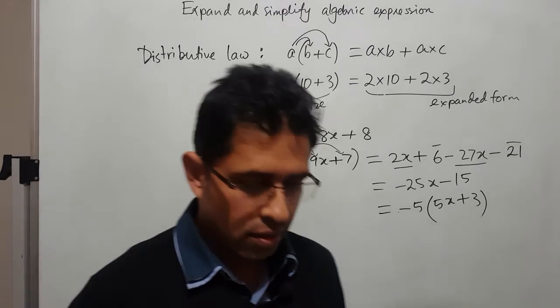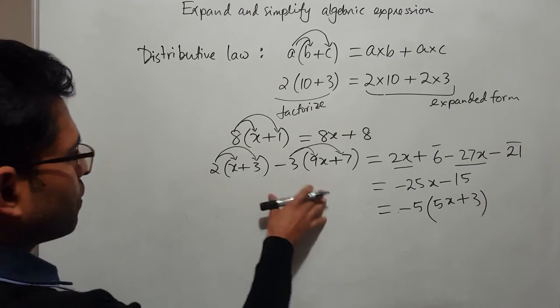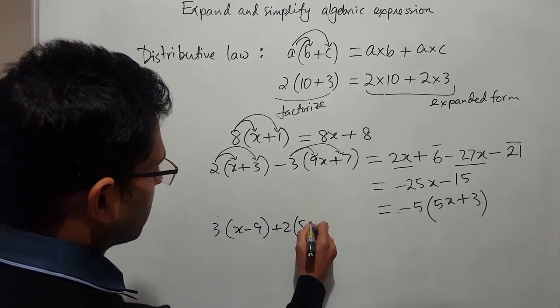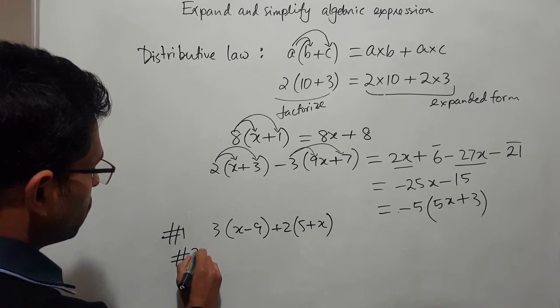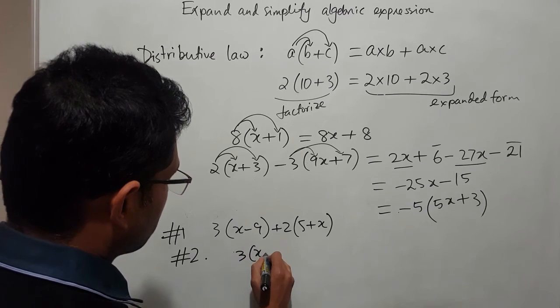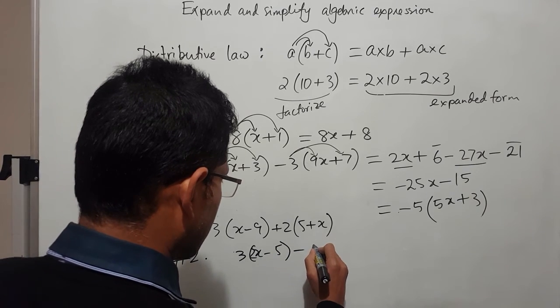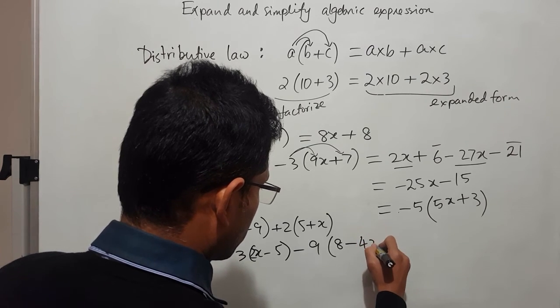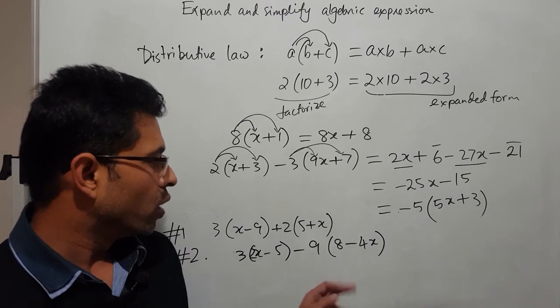I am leaving two questions for the students to answer. Question 1: 3x minus 9 plus 2 of 5 plus x. Question 2: maybe 3x minus or 2x minus 5 minus 9 of 8 minus 5x or 8 minus 4x, whatever. So these are the two questions I am leaving for the students to answer.